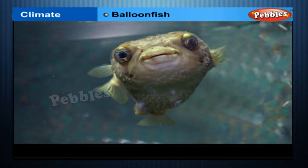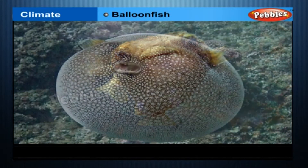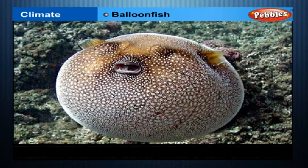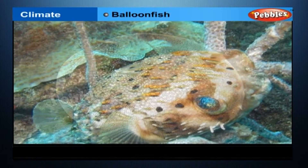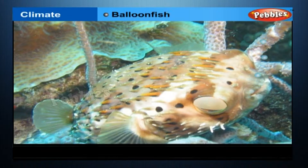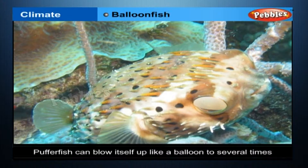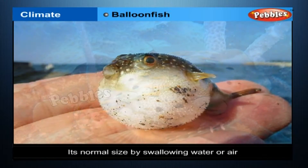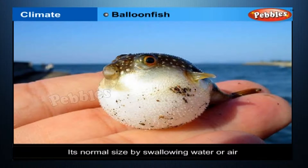Why is a puffer fish also called a blowfish or a balloon fish? The ability of an animal to adapt to an environment besides climatic conditions depends on the availability of food, nesting sites, and the population of predators. For example, a puffer fish can blow itself up into a balloon to several times its normal size by swallowing water or air.